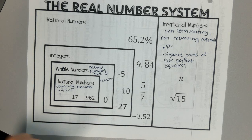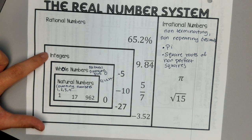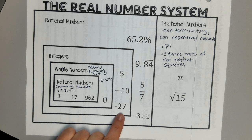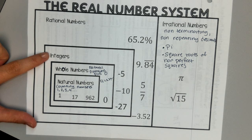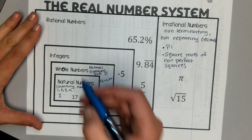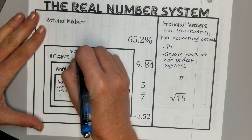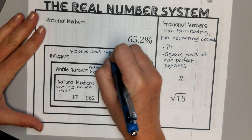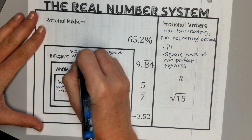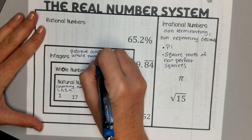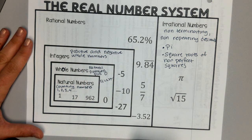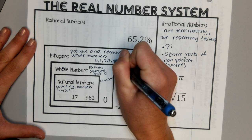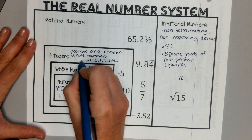When we add in the negative numbers, we get our integers. But not all negative numbers are integers, just the opposite of whole numbers. So our integers are positive and negative whole numbers. So you have all of the whole numbers, which are 0, 1, 2, 3, 4, and up. But then you also have those negative numbers.